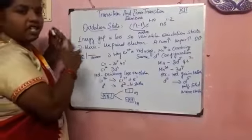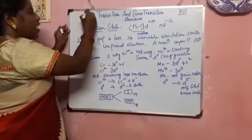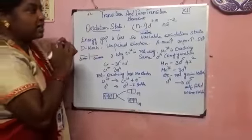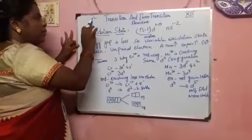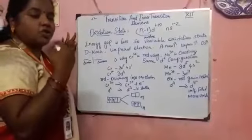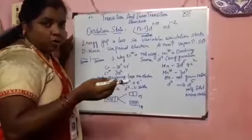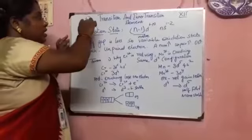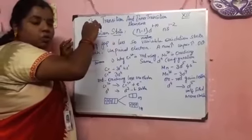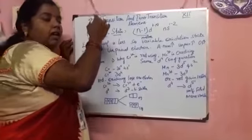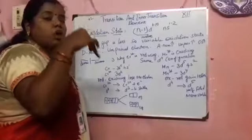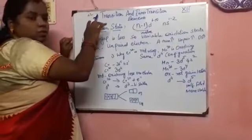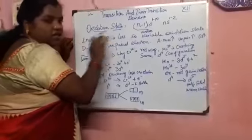Oxidation state is given with a symbol like plus 2 or plus 1. A number and a symbol are given. The plus symbol means the atom has lost electrons, and the minus symbol means it has gained electrons. The numerals 2, 3, 4, 5 denote how many electrons have been lost or gained. That is called the oxidation state.